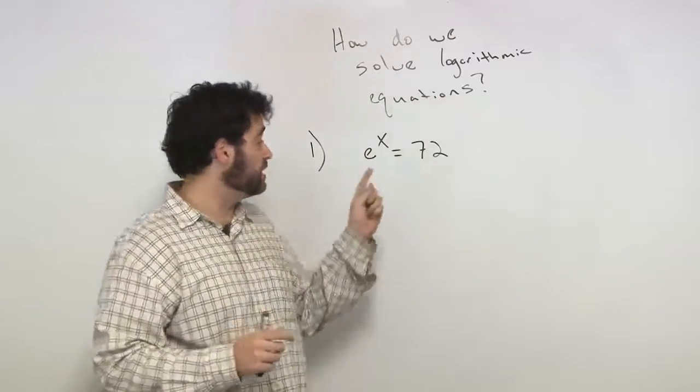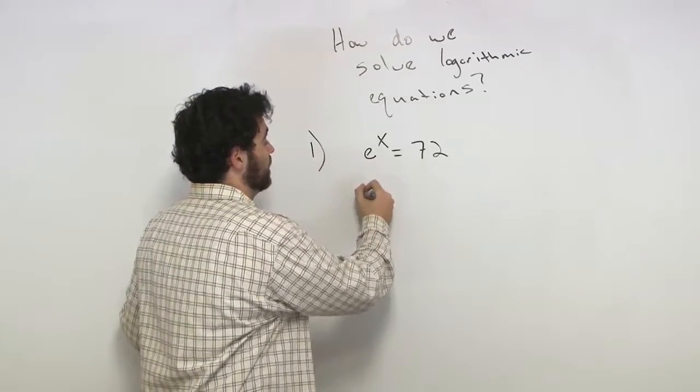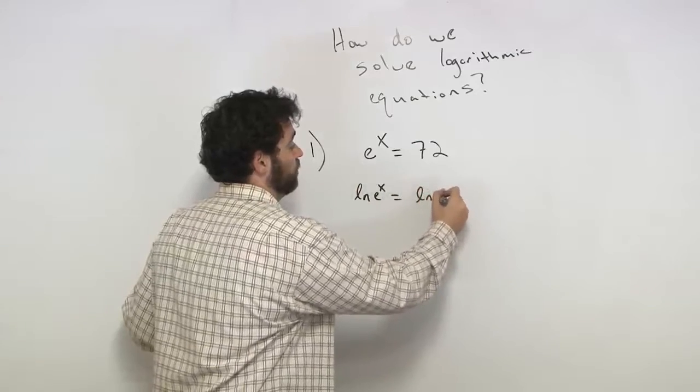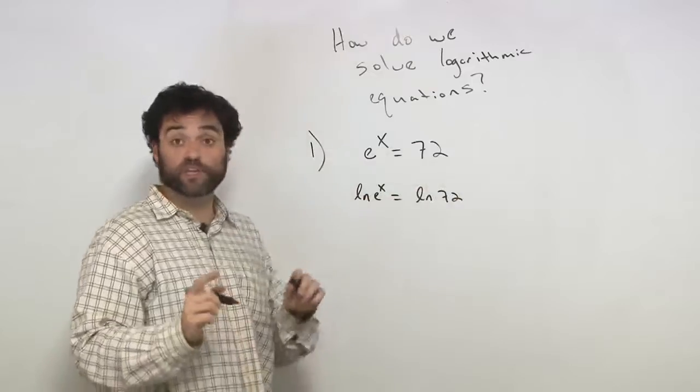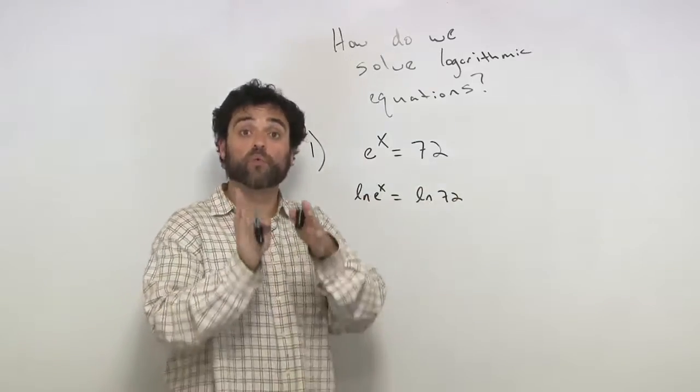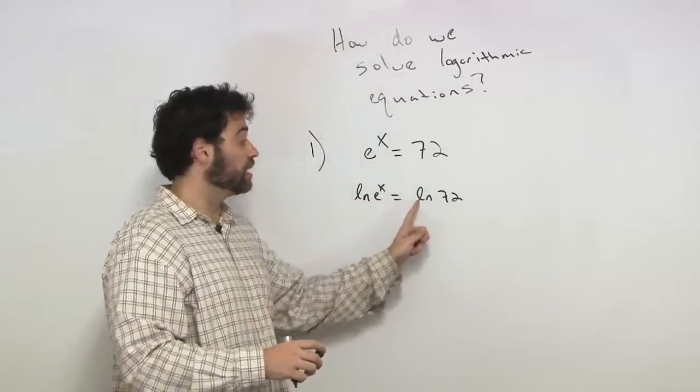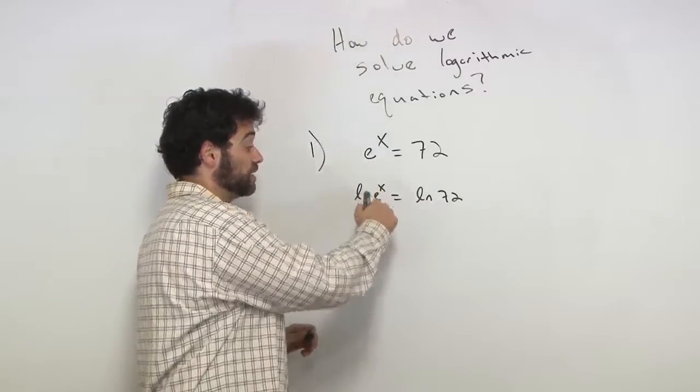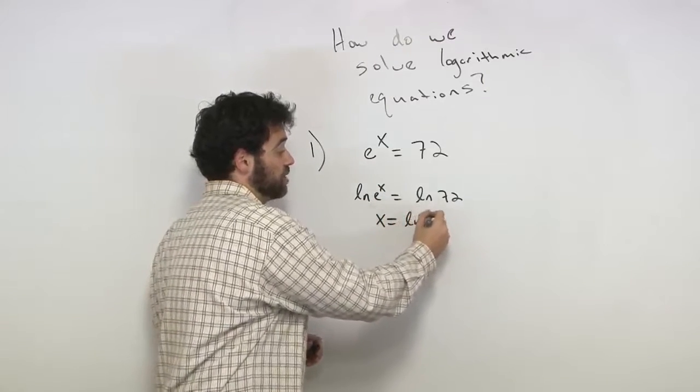Remember, natural log is base e. So to get rid of that e to the x, what am I going to do? I'm going to say that natural log of e to the x equals natural log of 72. Hit both sides with natural log. That's perfectly legal. Remember, we're balancing the equation. What I did on the left, I have to do on the right. Natural log and e to the x cancel out. So what we're left with is x equals natural log of 72.